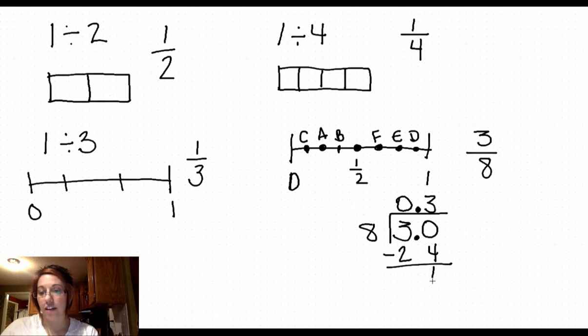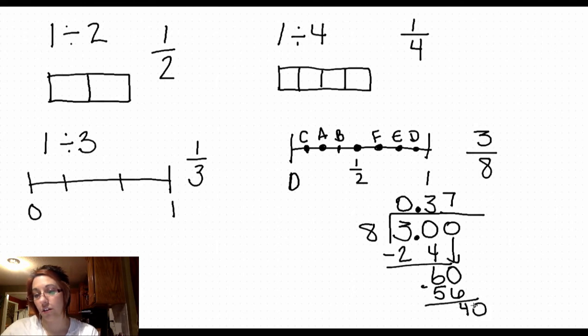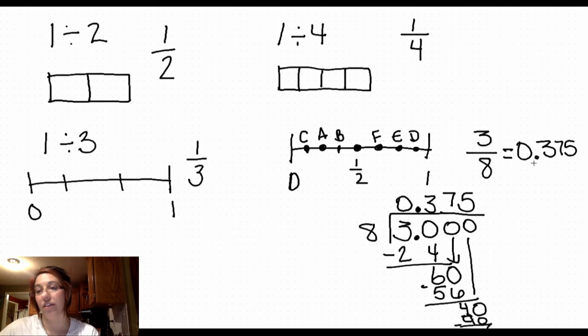Subtract, I get 6, 60, not quite 8, it will be 7 times. Add a 0, and you can see this is going to go out to 0.375. So the decimal form of this number would be 0.375.